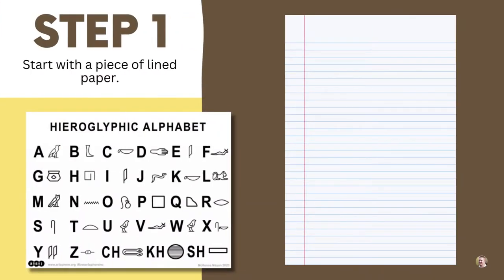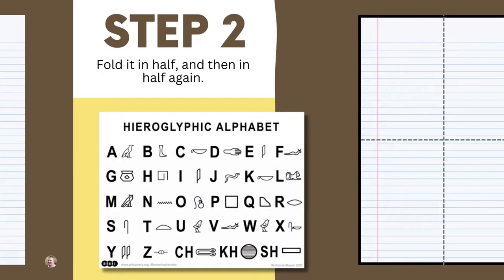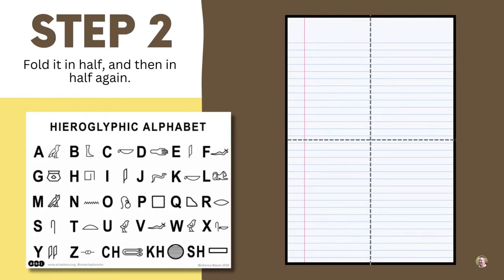The first step is going to be to get a lined sheet of paper. The lines in the paper will make it easier to space out your hieroglyphs evenly. If you just want to use a blank piece of paper, that is also fine. Step number two is to fold your paper in half and then half again. This will give you four different quadrants to write your hieroglyphs in.